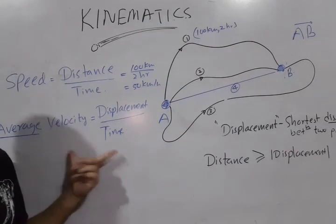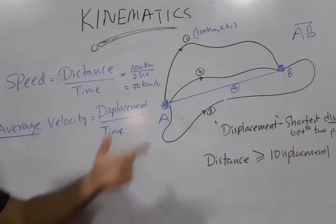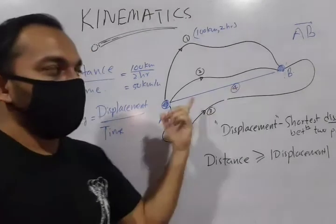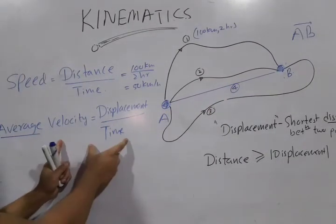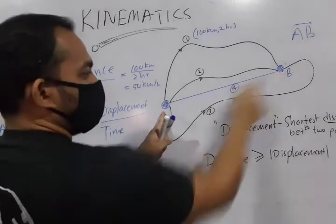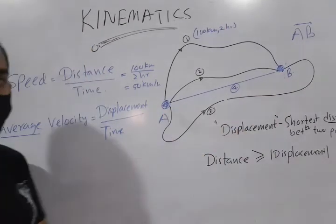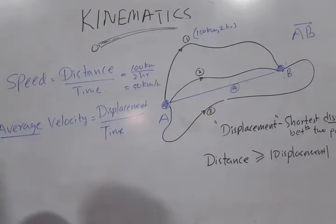Speed can be different. But the average velocity, average velocity might be consistent, provided that there are no any restrictions to motion here. So, average velocity is defined as the displacement. Displacement is the shortest distance between two points divided by the time it takes.